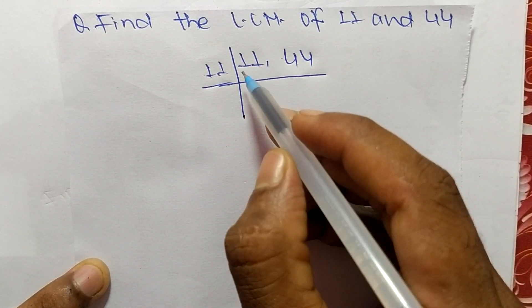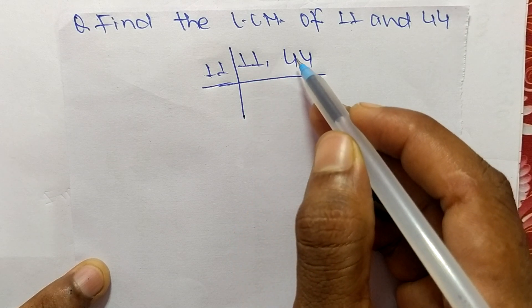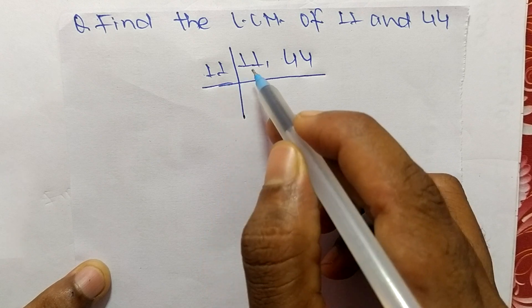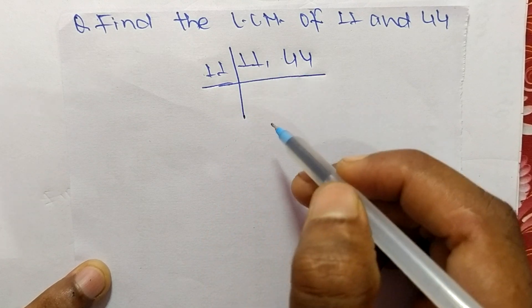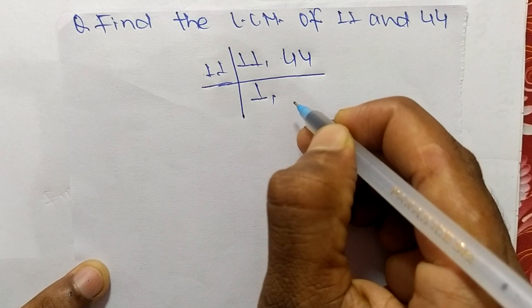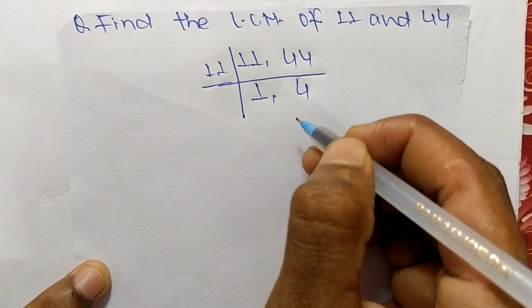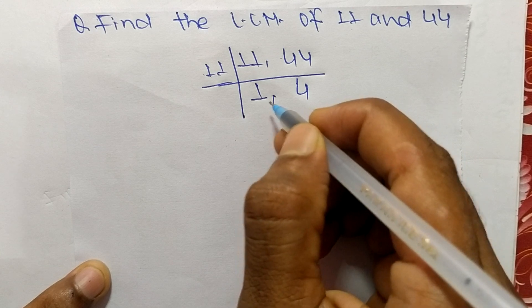2 can also divide 44 but it can't exactly divide 11, so 11 can divide both 11 and 44. 11 times 1 means 11, and 11 times 4 means 44. So now we get here 1 and 4.